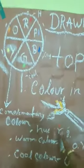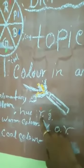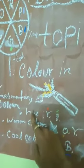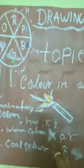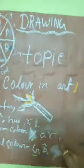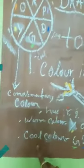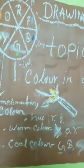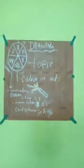Hue color is red and green. Warm colors are yellow, orange, and red. Cool colors are green and blue.